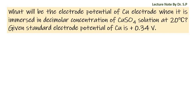What will be the electrode potential of Cu electrode when it is immersed in decimolar concentration of CuSO₄ solution at 20°C? Given standard electrode potential of Cu is +0.34 volts. Solution: For a reaction, Cu²⁺ + 2e⁻ → Cu.